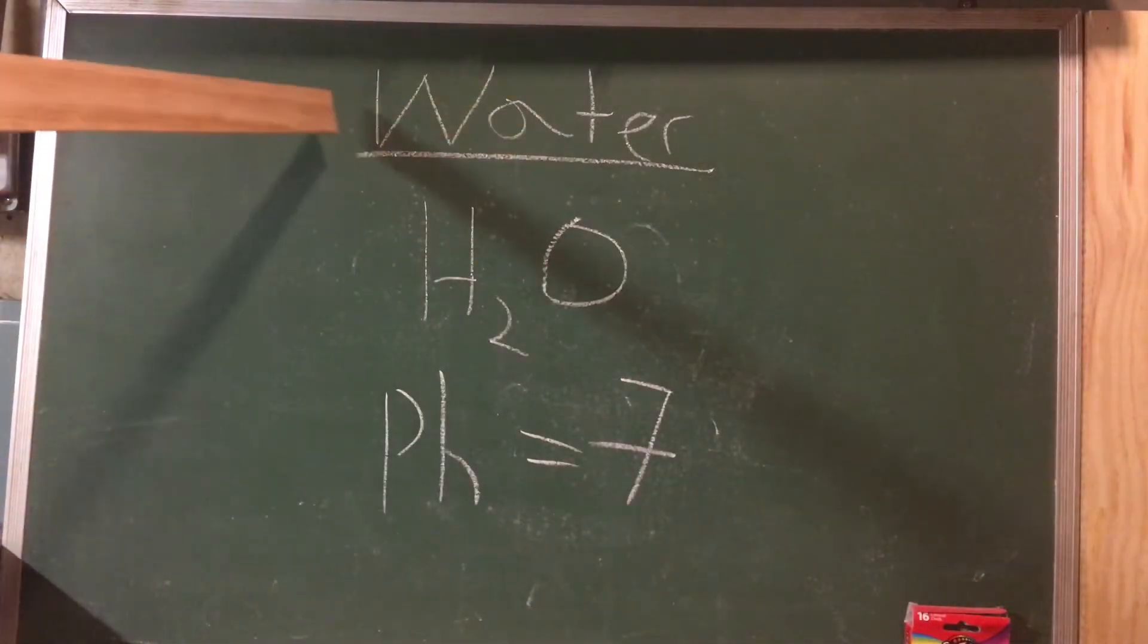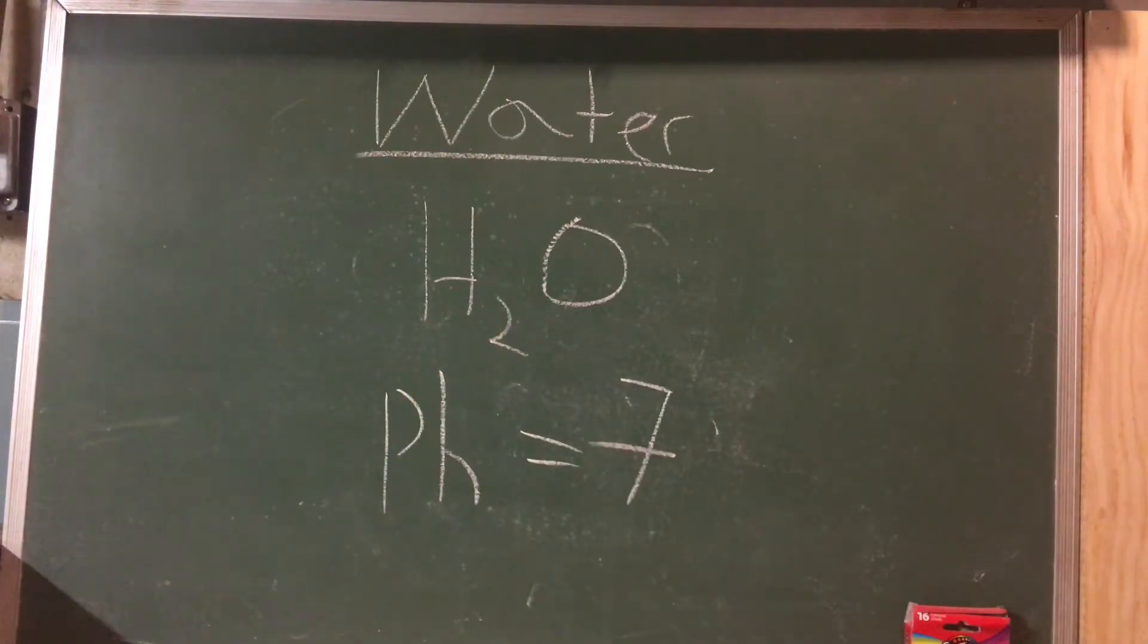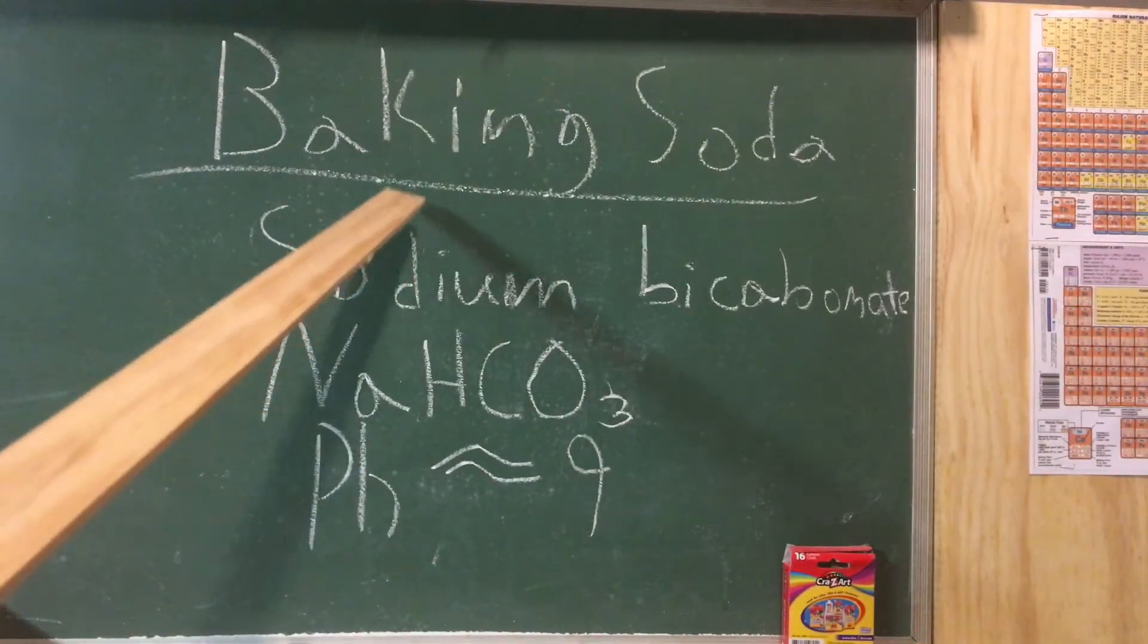An example of something that's neutral is water, which has a chemical formula of H2O and a pH of seven.